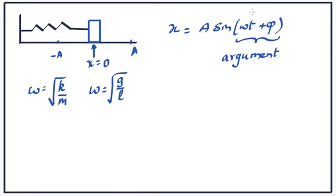When the argument is pi by 2, the sine is 1 — sine pi by 2 is 1 — that's when x is at its maximum. When the argument is 3 pi by 2, it's at a minimum, minus A, because sine 3 pi by 2 is minus 1. When the argument is 0, the block is passing through its equilibrium position, maybe moving to the right or maybe moving to the left — that we can determine by differentiating x and looking at the sign of the velocity.